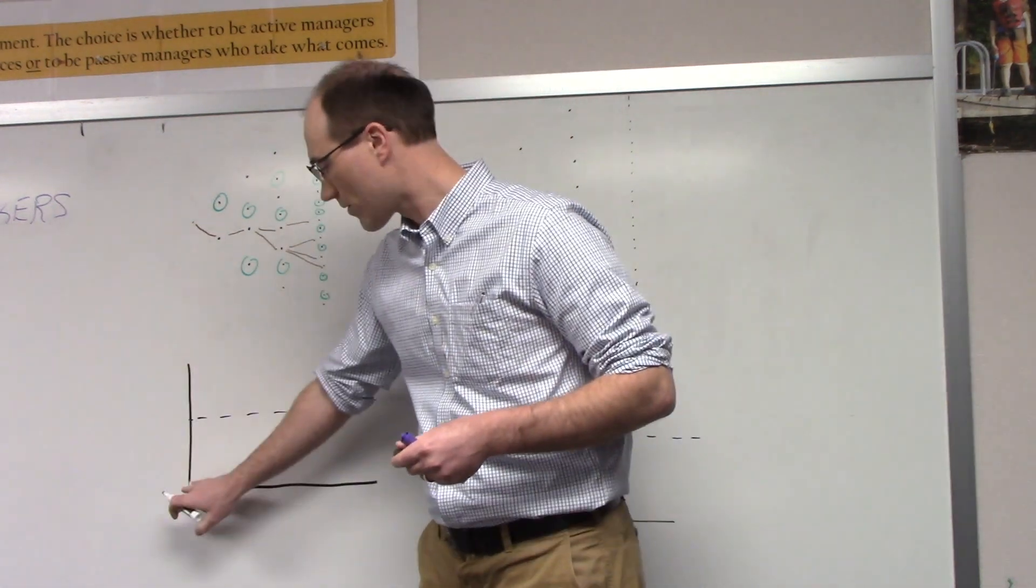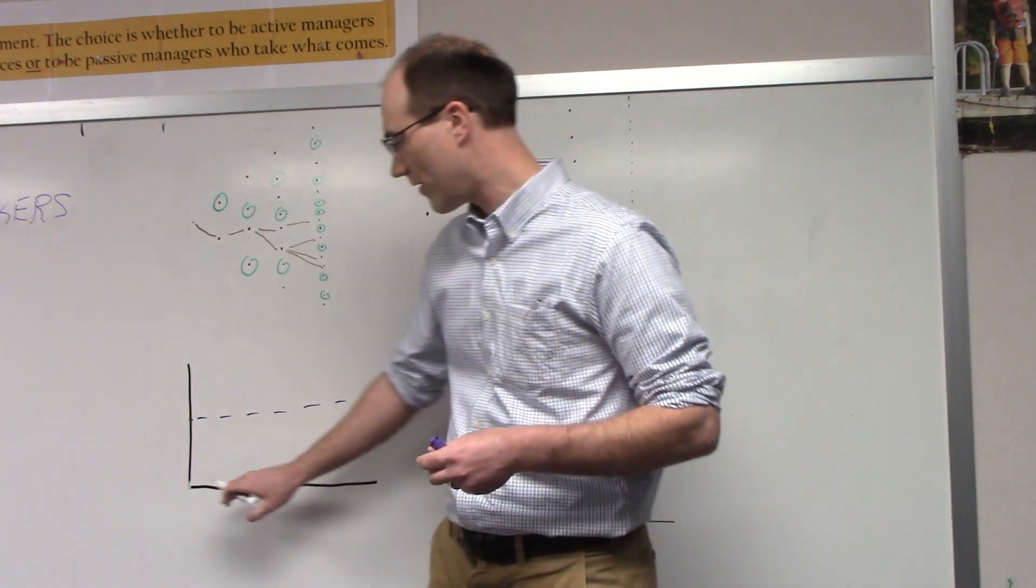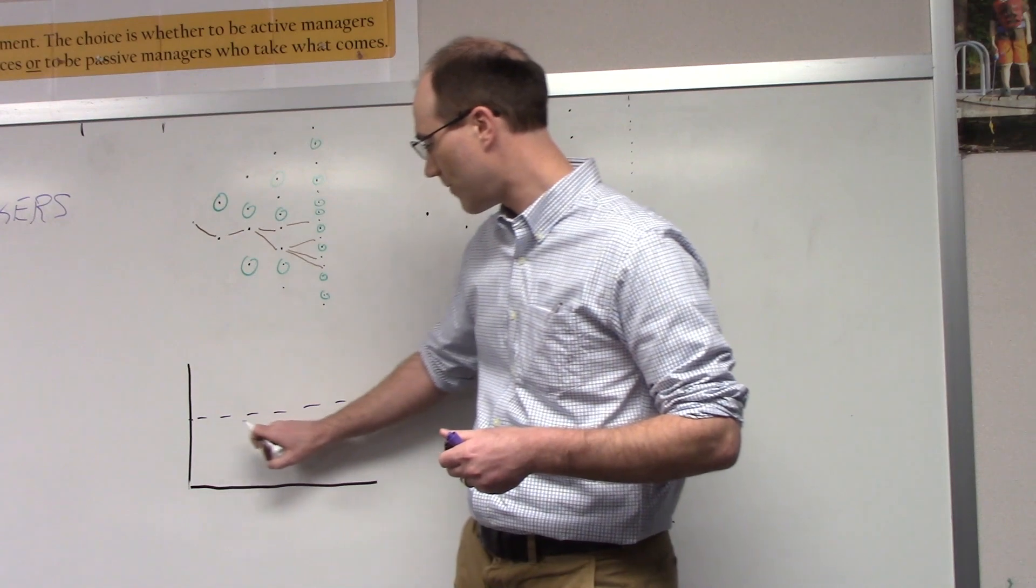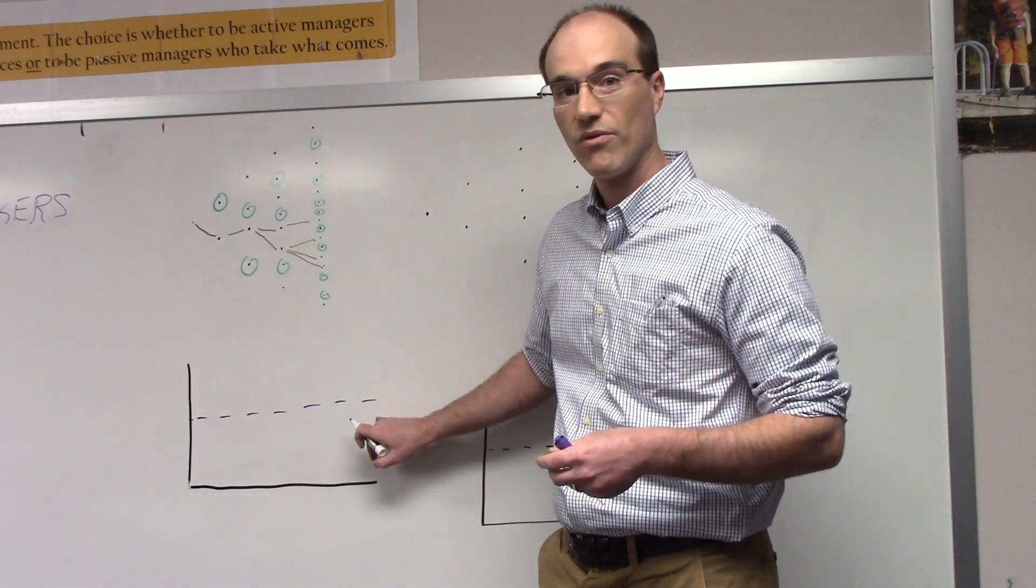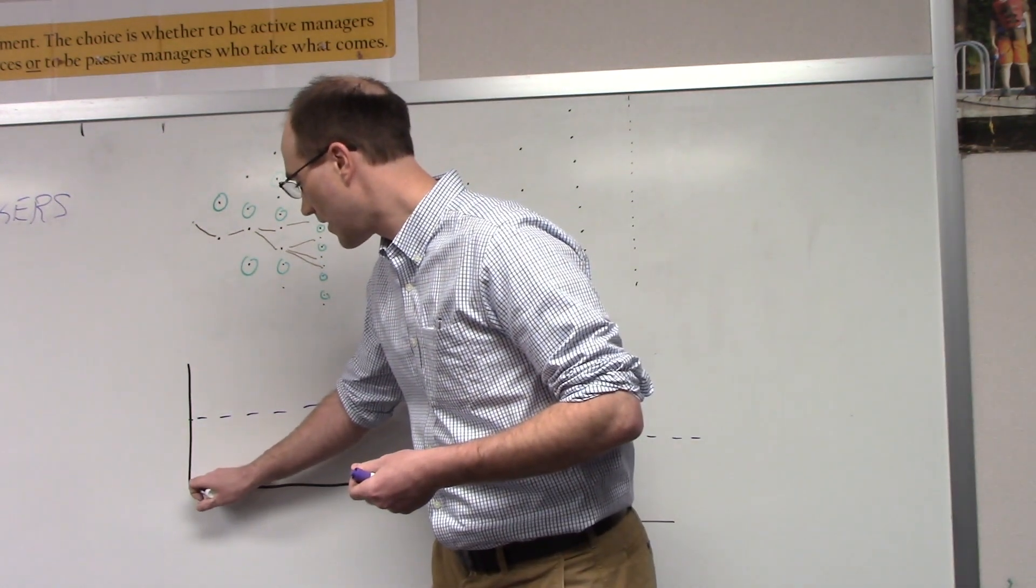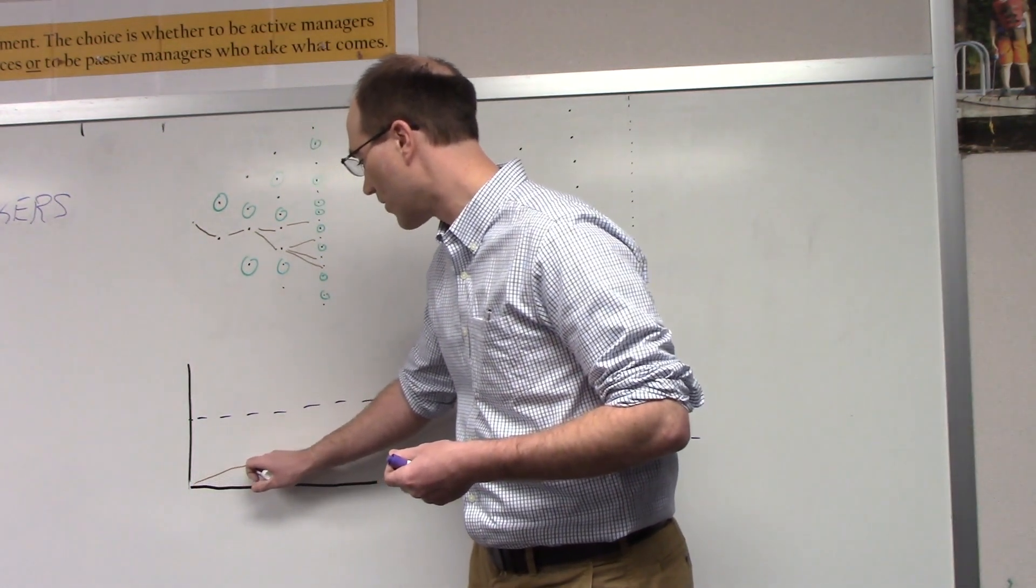You may remember this graph. This is the graph of how a virus grows in the community. The dotted line represents what our healthcare system can handle before it gets overwhelmed. Normally when this happens, this does not get anywhere close to that.